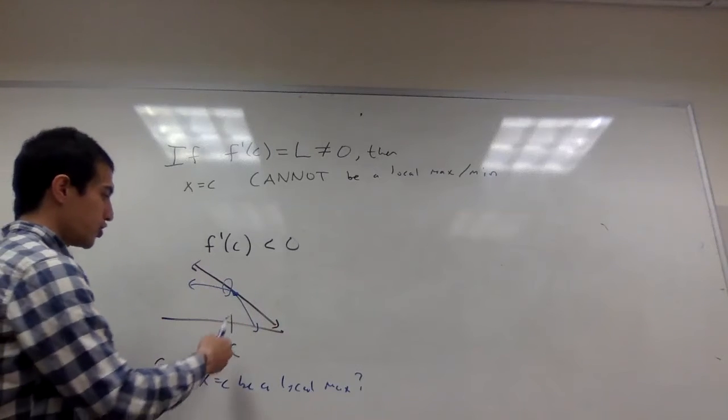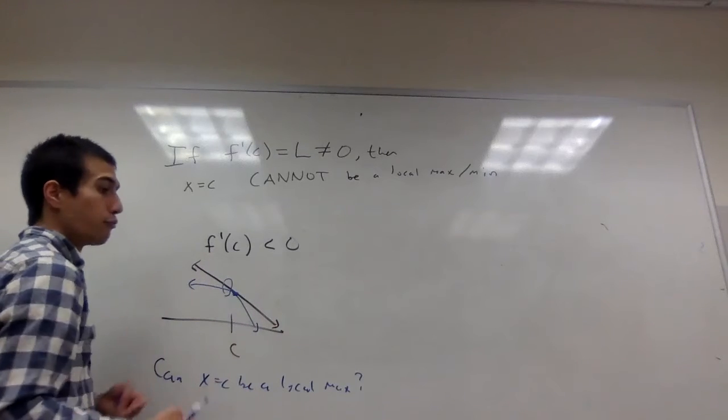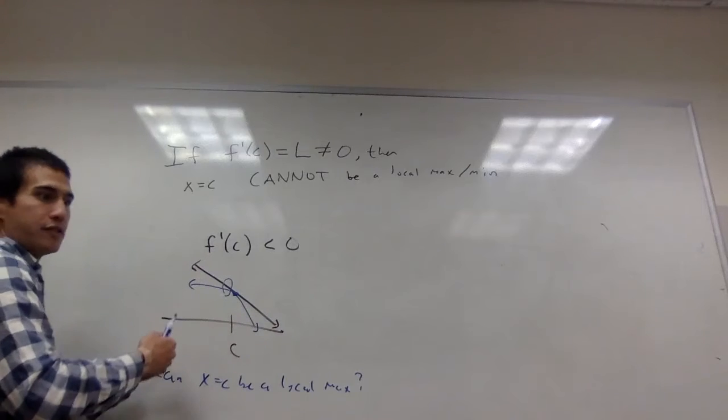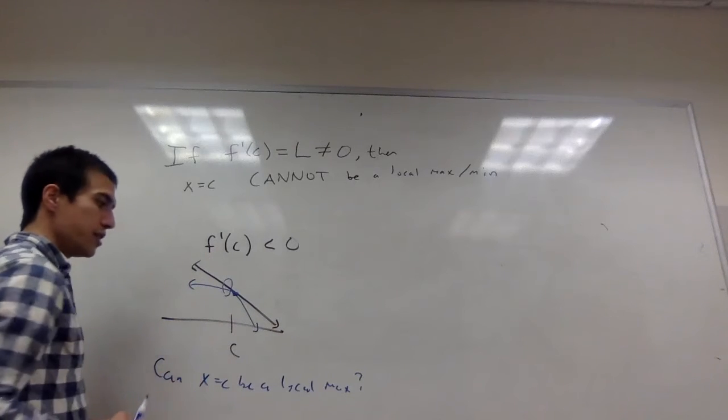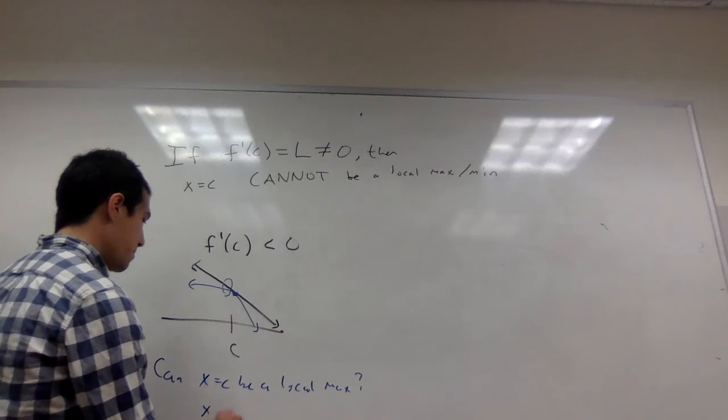So there's a point where the function is higher than at x = c, right next to c. Like right to the left of c, the function is higher than at x = c, and so x = c cannot be a local max. What about, can it be a local min?